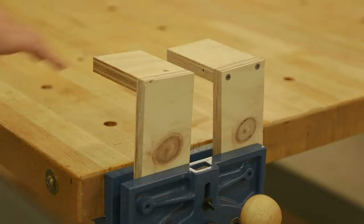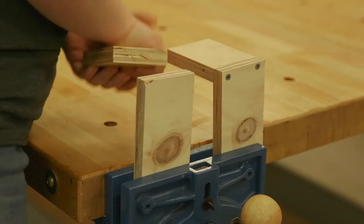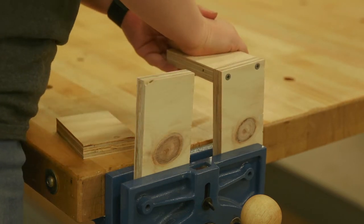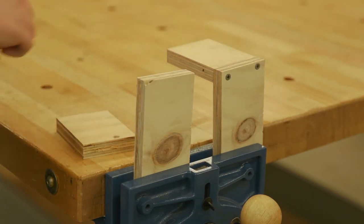Butt joints that will be exposed to stress should be reinforced with brads, nails, or screws. Another version of a reinforced butt joint would be a dowel joint where dowel pins are used for reinforcement.